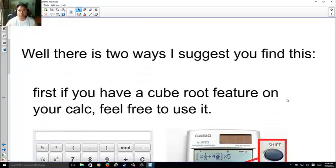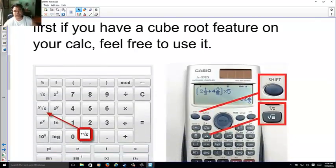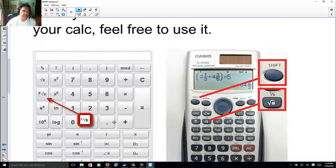The first is if you have a cube root feature on your calc, feel free to use it. I've given you a couple examples here. One might be a case where you have a cube root of 3, such as here. You'd have to hit the shift key and then this button for a Casio of this type. Or you might have this word, y square root of x. And what I believe you would do for a lot of these calculators, you'd probably hit like the 3 first, then this, then your number, or some semblance that you'd have to do through a little trial and error, and every calculator is different.